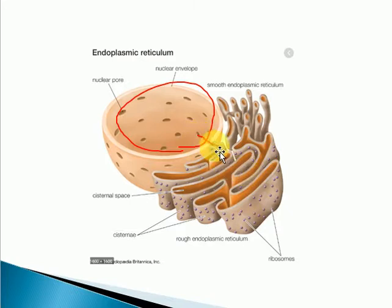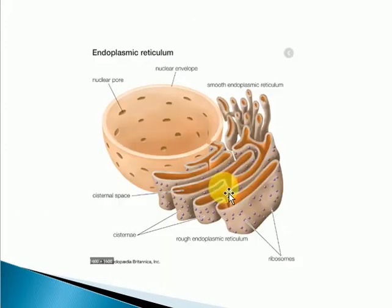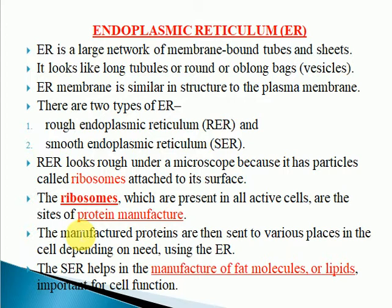The proteins and substances formed inside the nucleus are transported through the endoplasmic reticulum. Endoplasmic reticulum is a large network of membrane-bound tubes and sheets, and it looks like long tubules or round or oblong bag-shaped structures. The endoplasmic reticulum is similar in structure to the plasma membrane — it is made up of a lipid bilayer and certain proteins, similar to the composition of the plasma membrane.